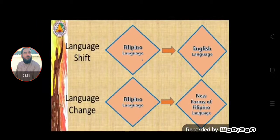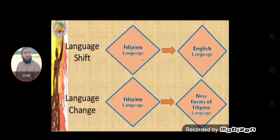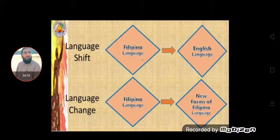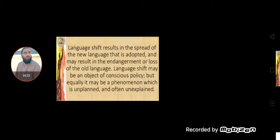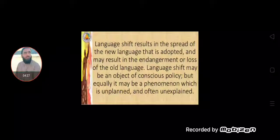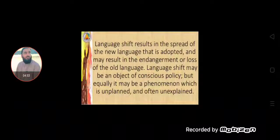For example, language shift: when Pashtu speakers start using totally English language — converting or replacing their mother tongue with English — we can say that language shift occurs in that society, in Pakistani or Pashtun society. Language change, on the other hand, means new forms of the same language — variations or new dialects developed within the same language. Language shift results in the spread of the newly adopted language and may also result in language change.